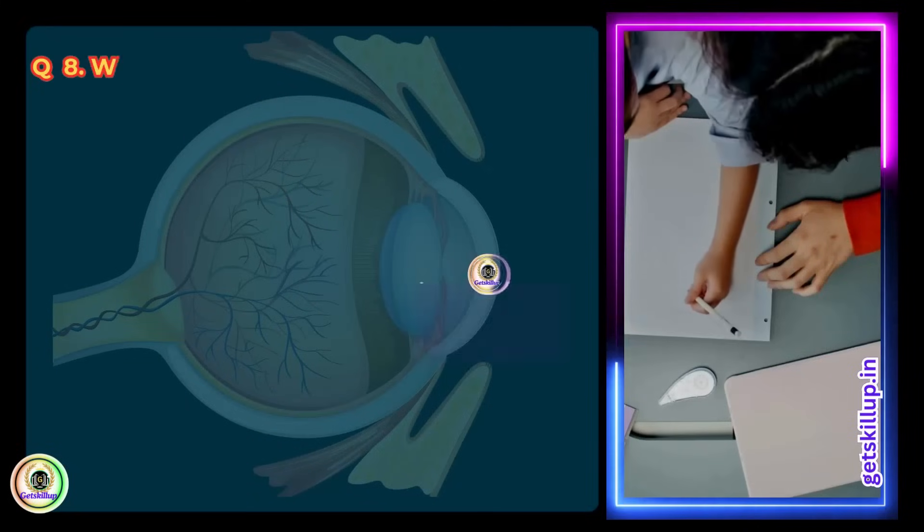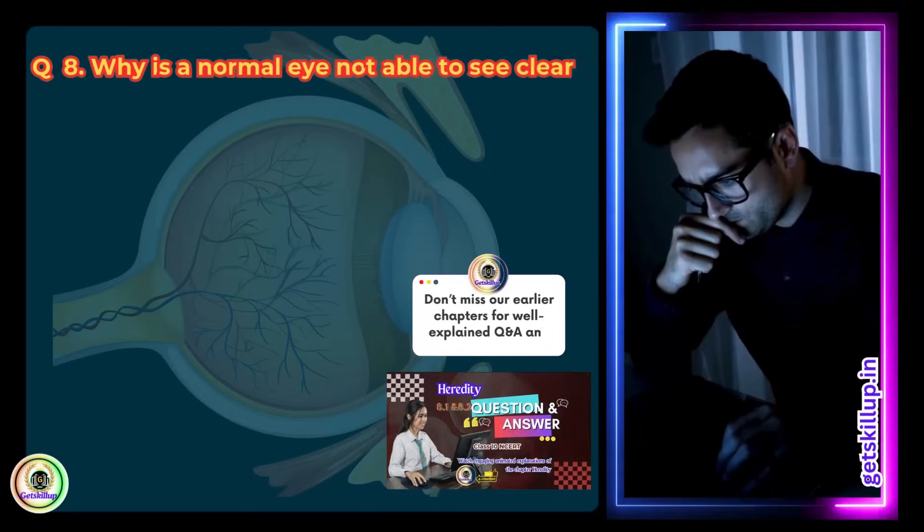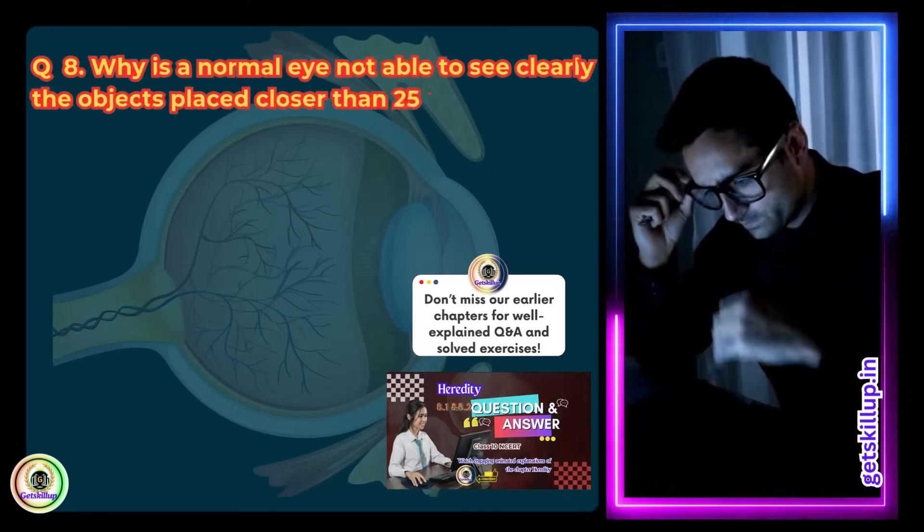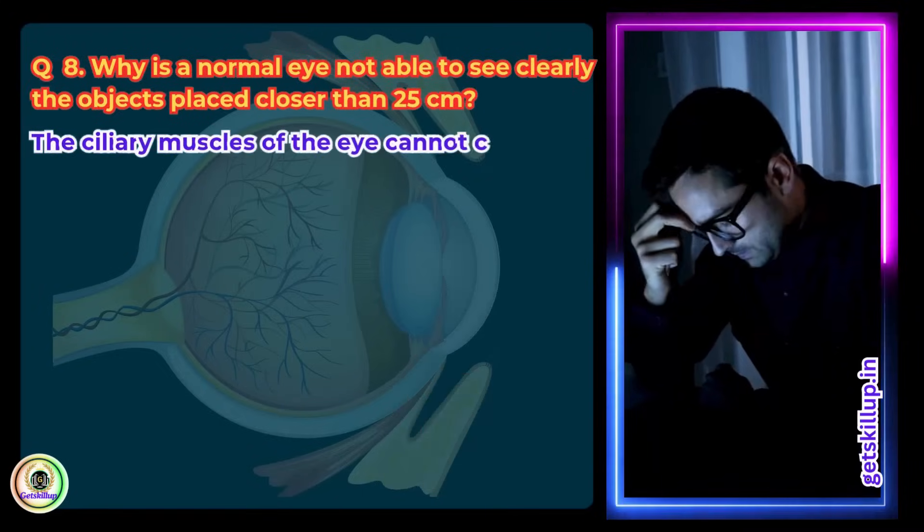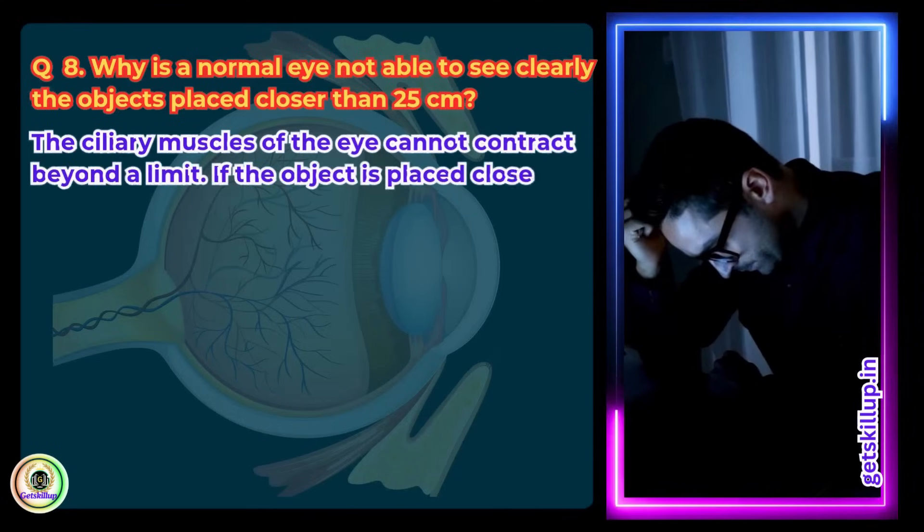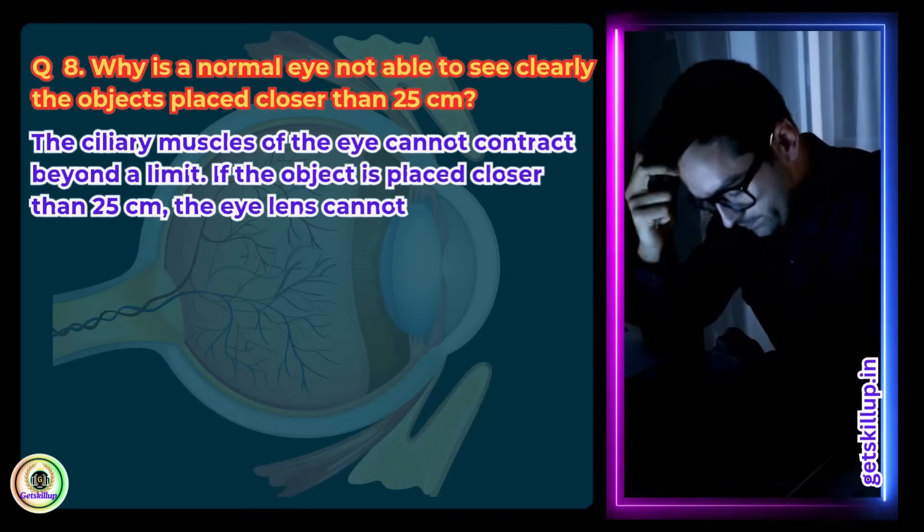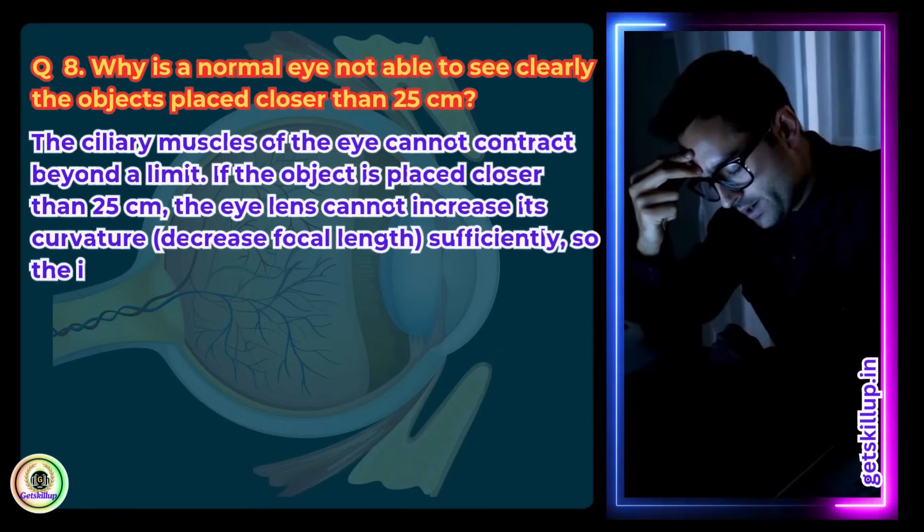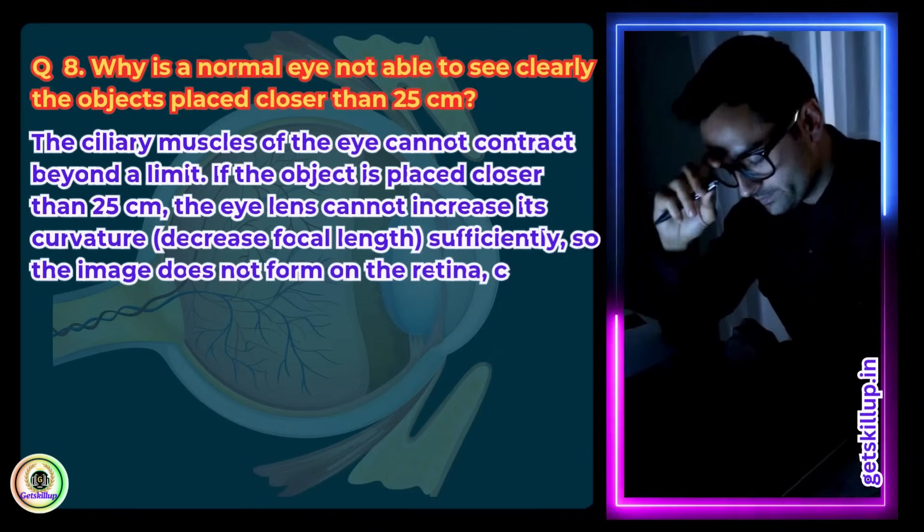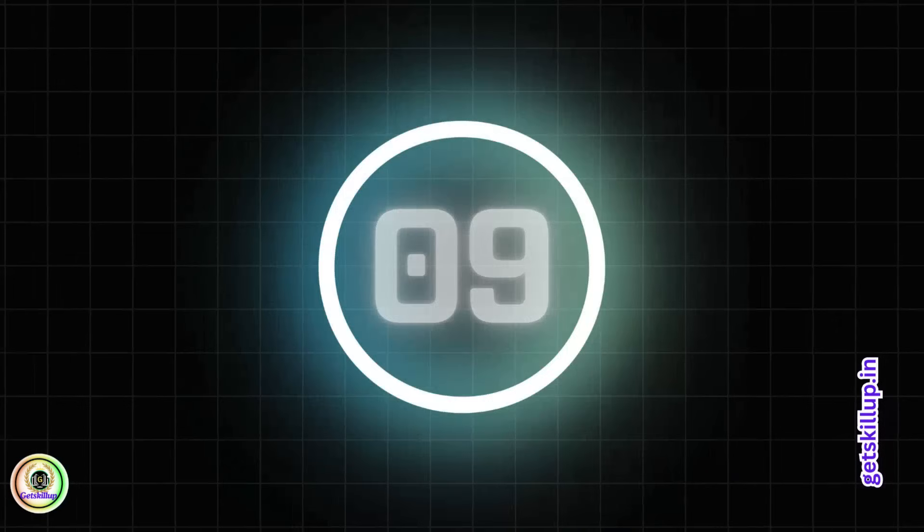Question 8. Why is a normal eye not able to see clearly the objects placed closer than 25 cm? Answer: The ciliary muscles of the eye cannot contract beyond the limit. If the object is placed closer than 25 cm, the eye lens cannot increase its curvature or decrease focal length sufficiently. So, the image does not form on the retina, causing blurred vision.